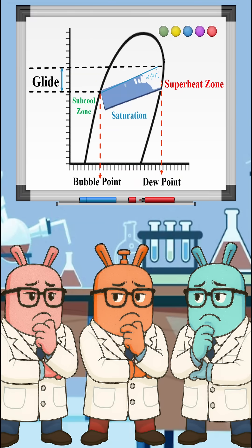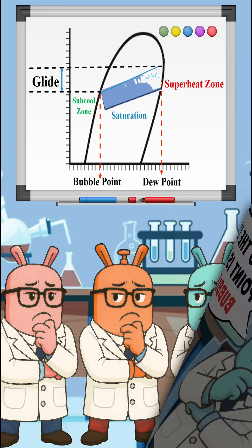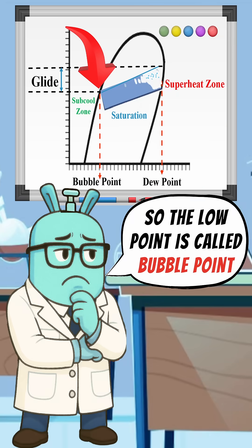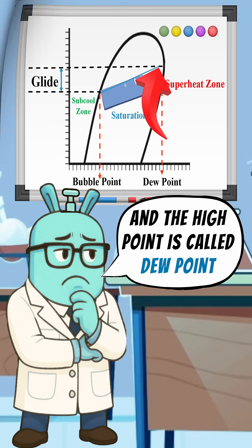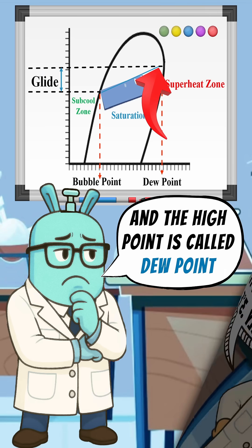So glide involves superheat, subcool, saturation, bubble point, and dew point. The low point is called the bubble point, and the high point is called the dew point.